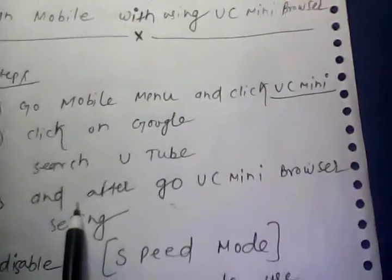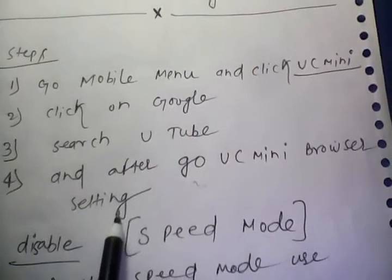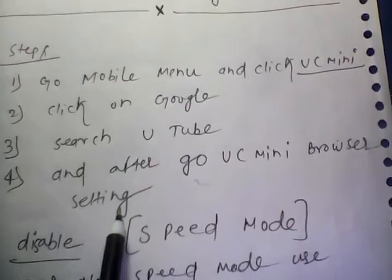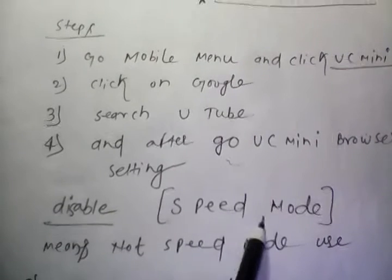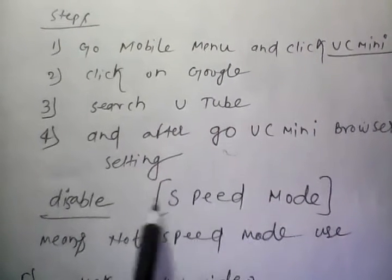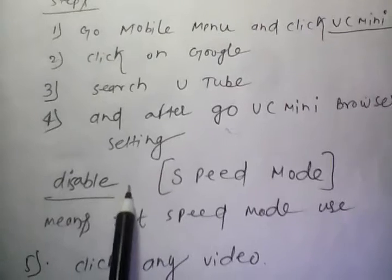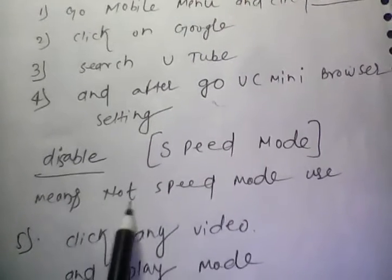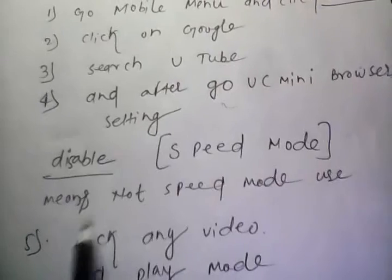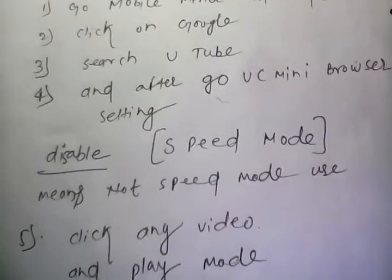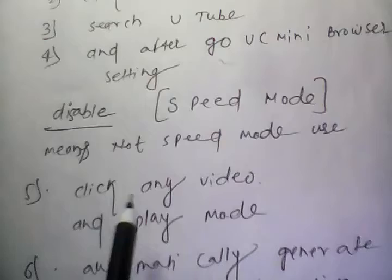This next step is very important for downloading a YouTube video. After opening UC Mini browser, go to the Settings section. In Settings, find Speed Mode and make sure to disable it. Disabling Speed Mode is the most important step to downloading YouTube videos.